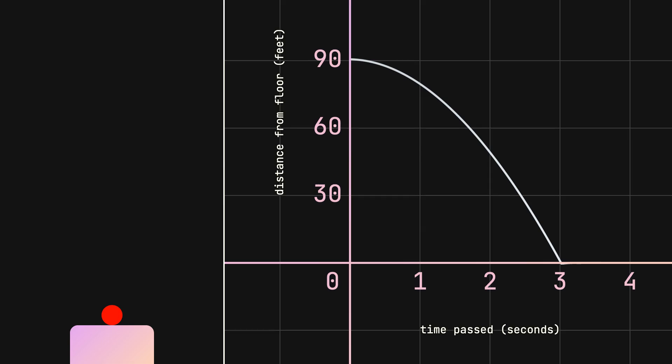You might have expected the graph to be a straight line down. If it actually was, the ball's fall would look like this.